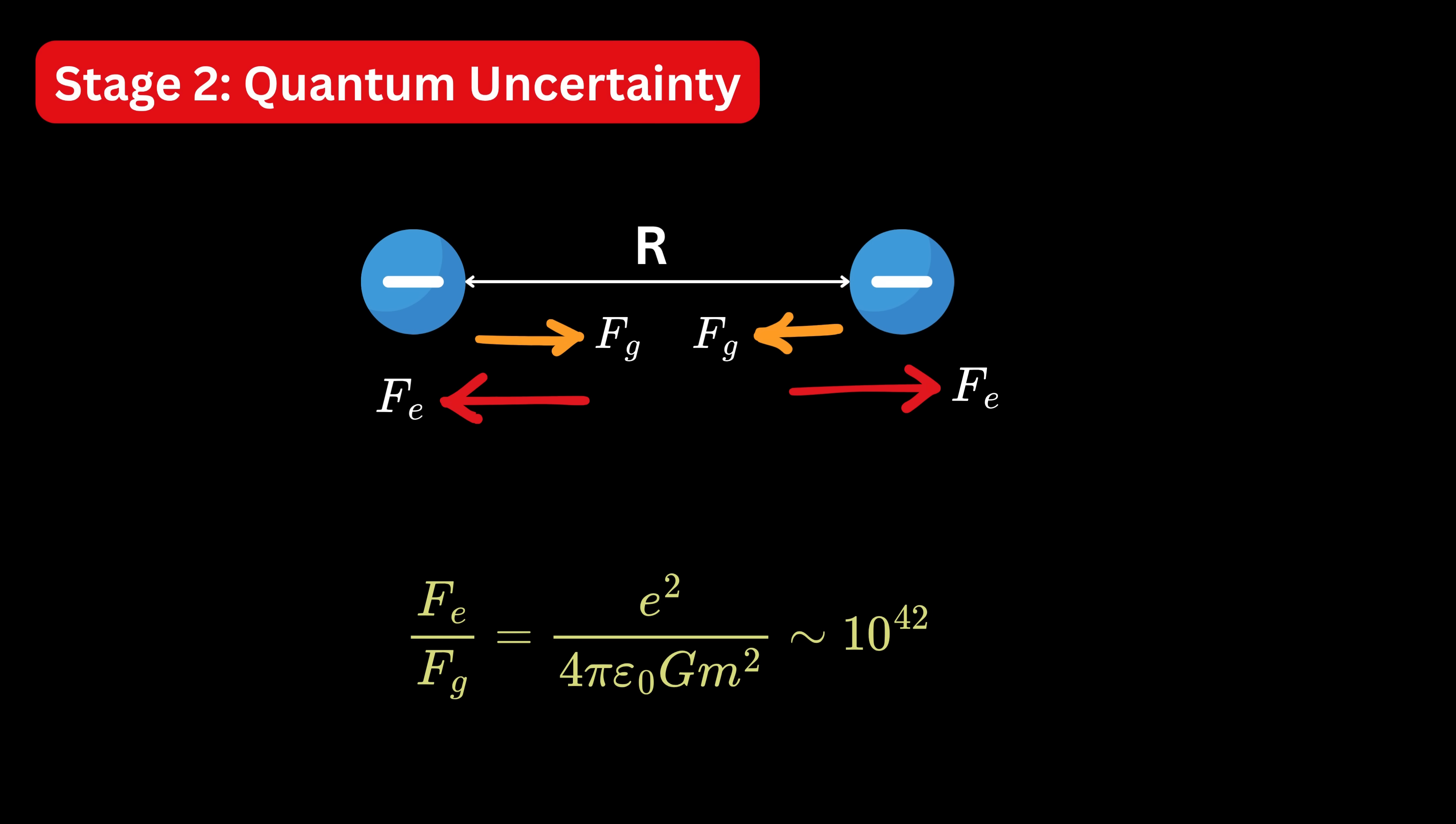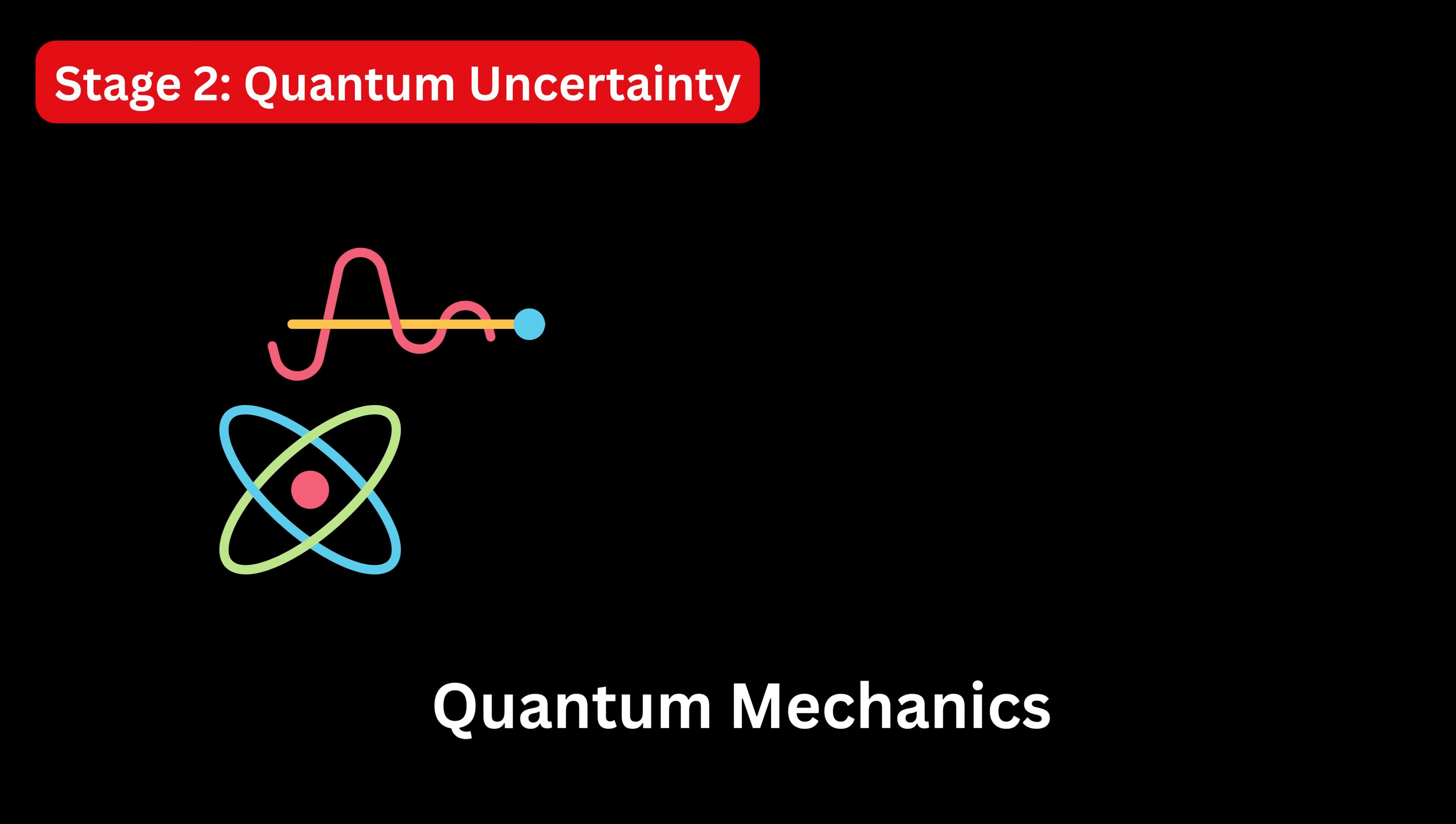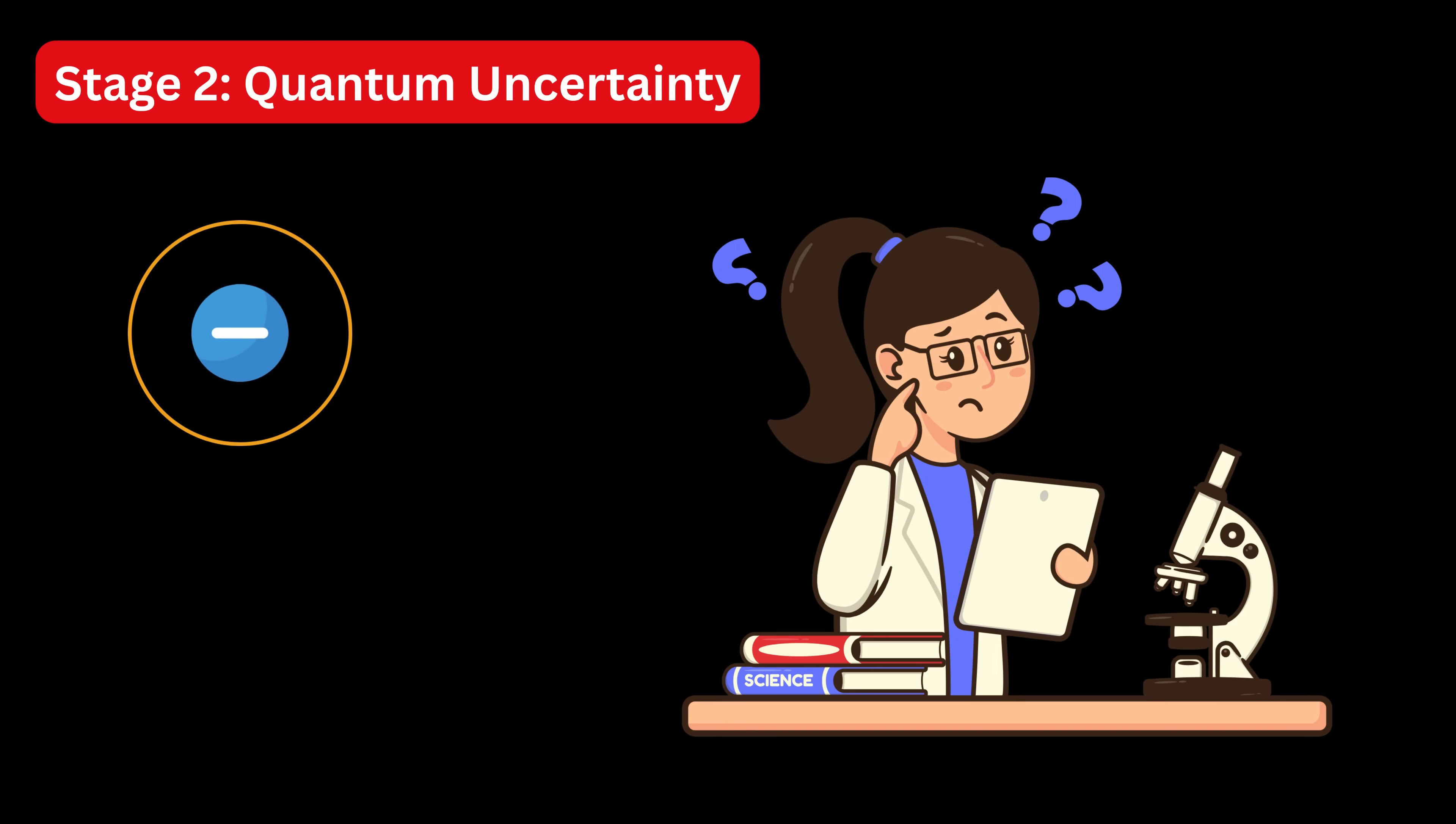This brings us to stage 2, where quantum uncertainty joins the game. Classical physics alone can't take us to the smallest scales. We need quantum mechanics because nature starts acting fuzzy and uncertain when we try to look too closely into it. Imagine trying to catch an electron in a very small trap so we can see exactly where it is. At first, it sounds reasonable, but the universe doesn't work that way.